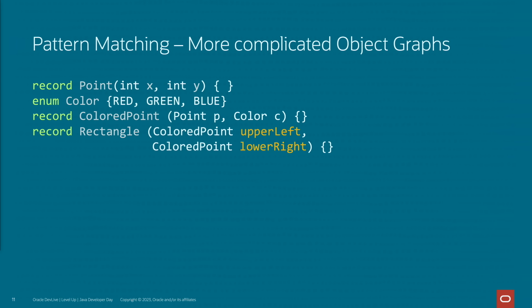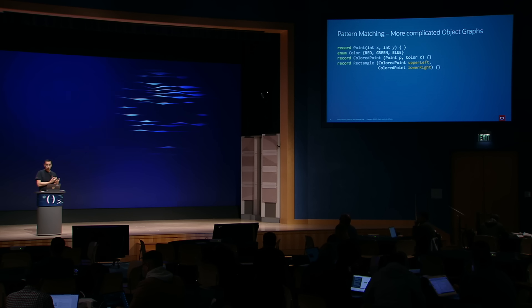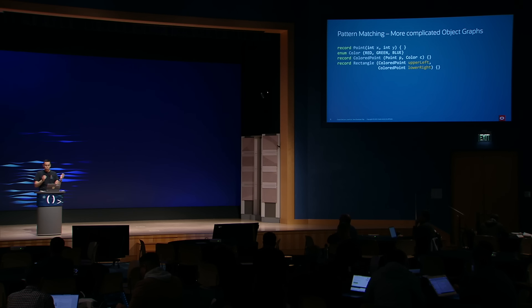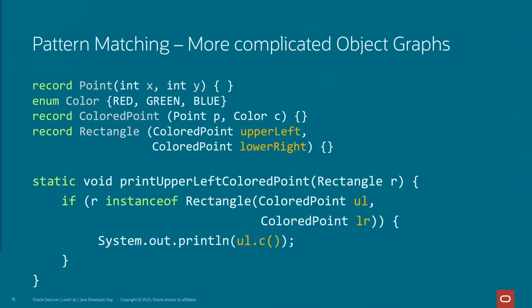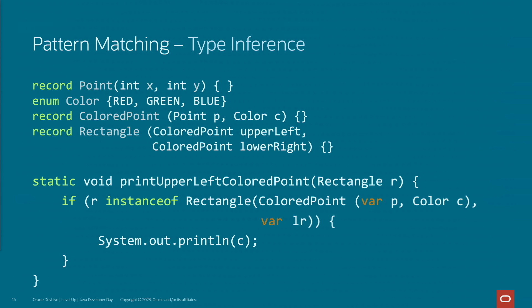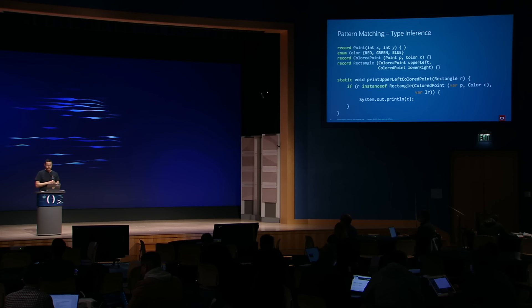The true power of pattern matching is that it scales elegantly to match more complicated object graphs. Let's make the point a little more complicated — we introduce a Color, then define a ColorPoint as a Point with a Color, and a Rectangle as two ColorPoints. We can extract the components of an object with a record pattern. If we wanted to get the color from the upper left, we could write something like upperLeft.color. But if we can nest the record patterns, we can deconstruct that first ColorPoint into its components and access directly the parts we need. We can also use the var keyword so we don't have to define the types — we can just infer them, which makes it slightly easier to read.